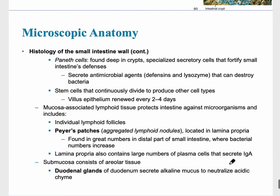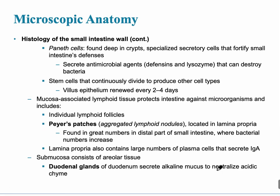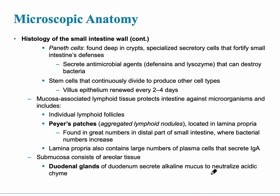The next slide describes the histology of the small intestine. While the duodenum is very important for absorption, the remaining parts of the small intestine serve other purposes. For example, Paneth cells are found deep in the crypts — specialized secretory cells that provide intestinal defenses by secreting antimicrobial agents called defensins and lysozymes. At the distal end of the small intestine, in the ileum, there are specialized lymphoid nodules called Peyer's patches, which you may have learned about in the lymphatic system.